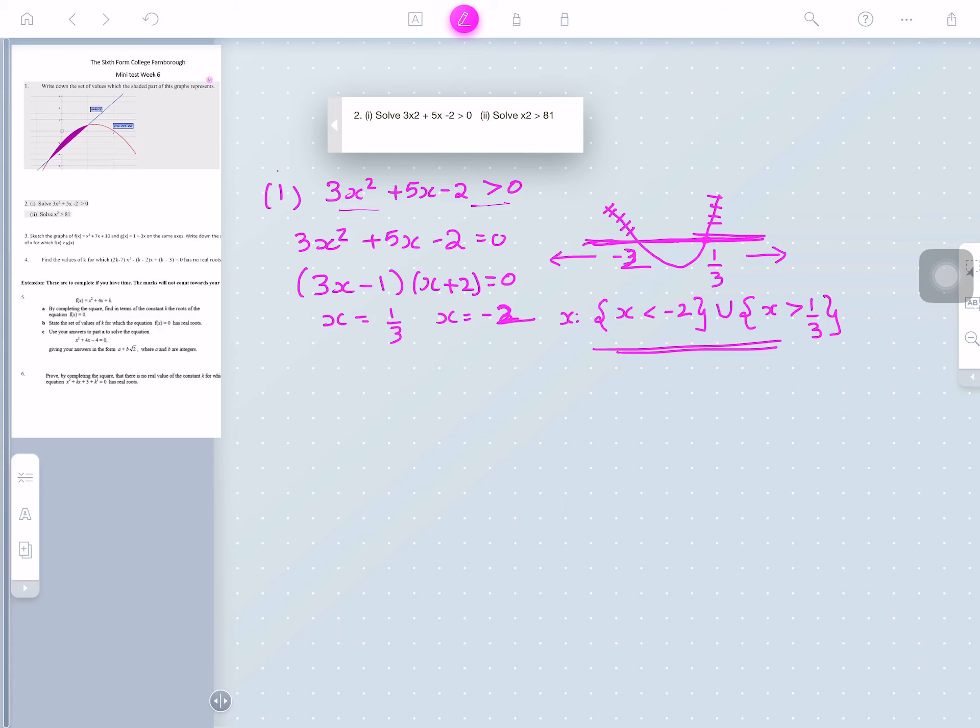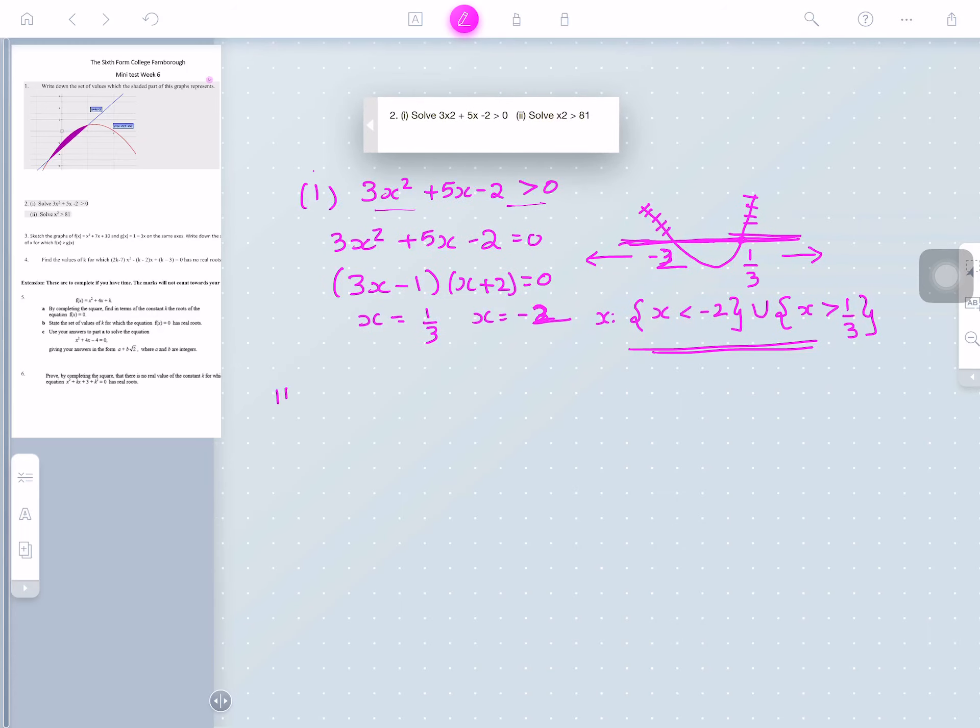Now, for part 2, x squared is greater than 81. So first of all, you write down x squared minus 81 is greater than 0.